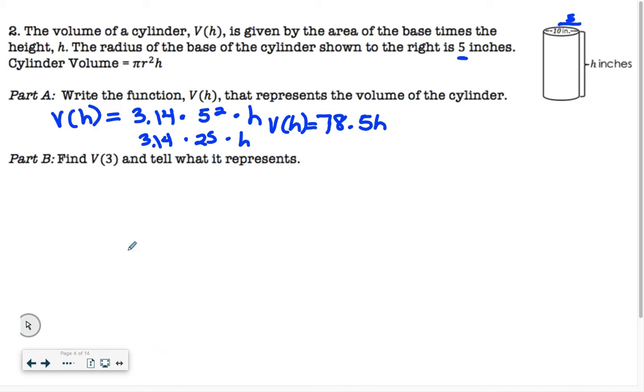So now for B, it says find V of 3 and tell what it represents. So V of 3 just means we're plugging 3 in wherever H is. So we're going to rewrite it as 78.5. But instead of writing H, we're writing a 3.